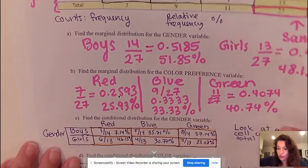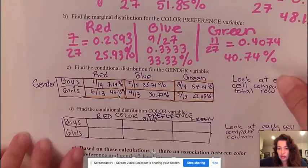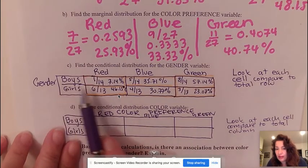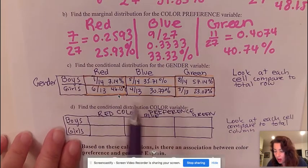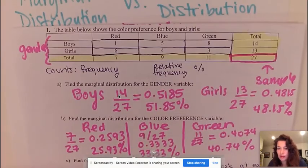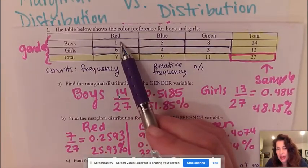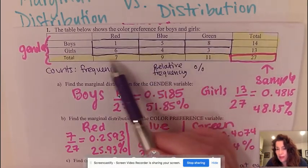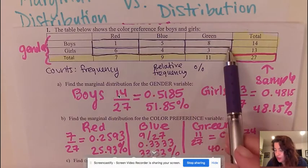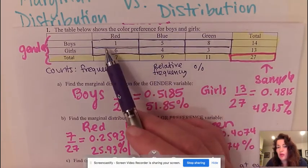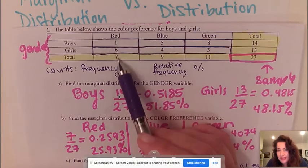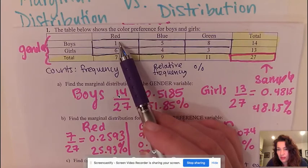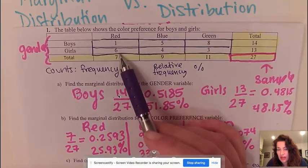Now I want to do the conditional distribution for color. I'm going to do the same thing, except instead of looking at the rows we will look at the columns. Going back to the columns, I'm going to look at every cell. Remember the cells are everything in your table but not including your margins. Every cell looking downwards, because that is the color preference for colors. I'm going to say 1 out of its total 7, 6 out of 7.